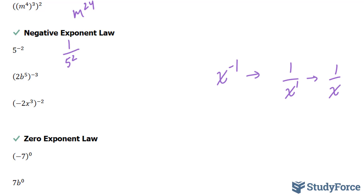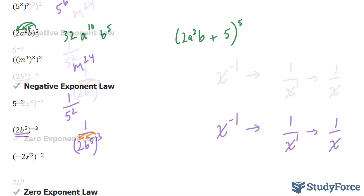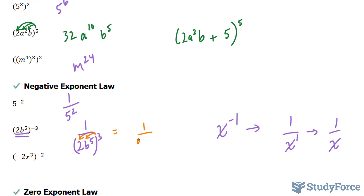Notice that this whole term is set to the power of negative 3. What this means is that you take the reciprocal: 1 over 2b to the power of 5, then switch the sign so the exponent becomes positive 3 at the bottom. You then distribute this 3 to every component, giving you 1 over 2 to the power of 3, which is 8, times b to the power of 5 to the power of 3, which is b to the power of 15. That would be your final answer.